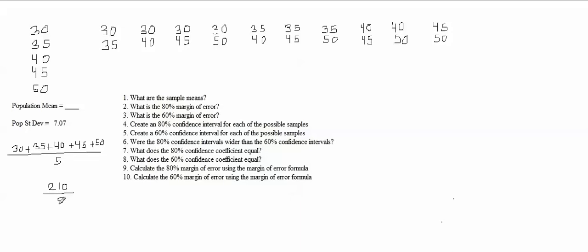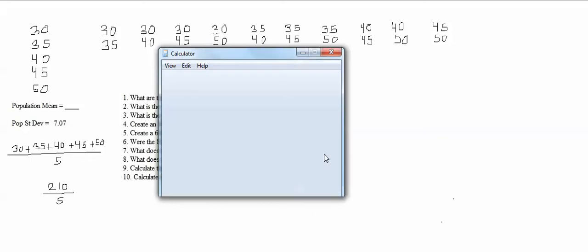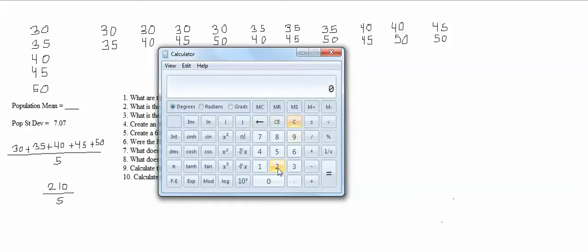Let me double check that. 30 plus 35 is 75. 75 plus 40 is 115. 115 plus 45 is 160. And then 160 plus 50 is 210. Let's see what 210 divided by 5 is. It says 42. So something is not right. Let me add these numbers up here with the calculator.